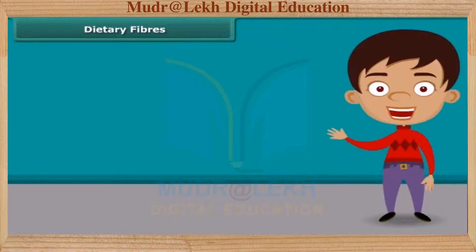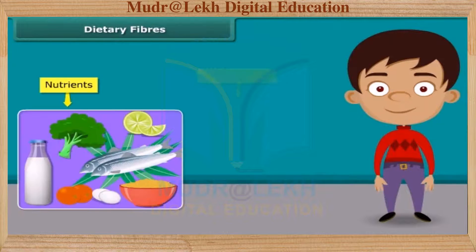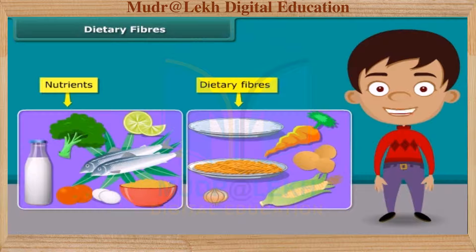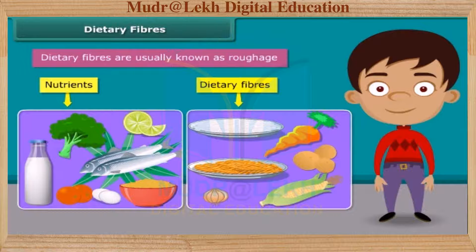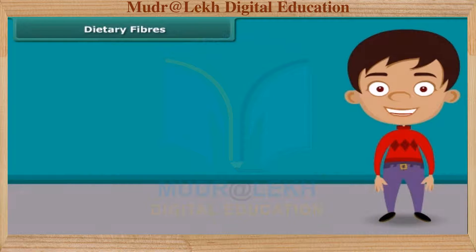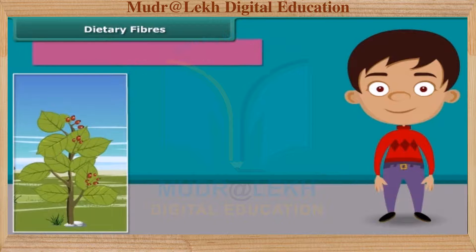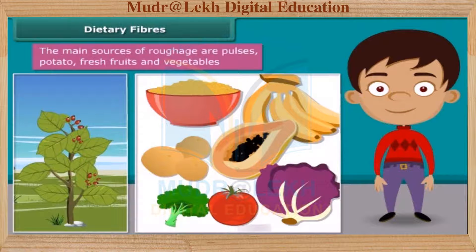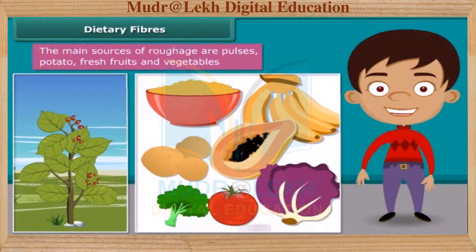Dear friends, do you know that besides nutrients, dietary fiber also plays an important role in our body. They are usually known as roughage. Roughage does not provide any nutrition to our body but adds bulk. They are found only in plants — pulses, potato, fresh fruits and vegetables are the main sources of roughage. This helps our body to get rid of the undigested food.